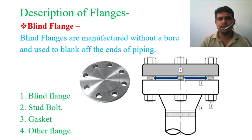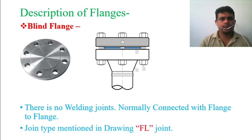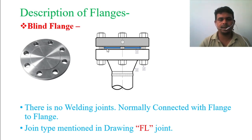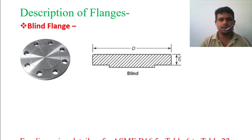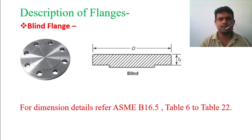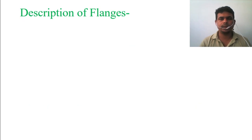You need two flanges to connect — as shown in the first lecture, this is how you connect a flange. For the blind flange, there is no welding joint; it is normally connected flange to flange. The joint type mentioned in the drawing is 'FL', which indicates a flange-to-flange connection. For the blind flange dimensions — outer diameter and thickness — refer to ASME B16.5 Table 6-2-2 and ASME B16.47 for larger bore diameters.